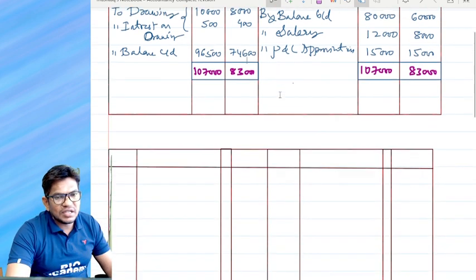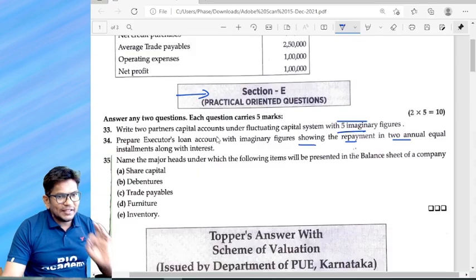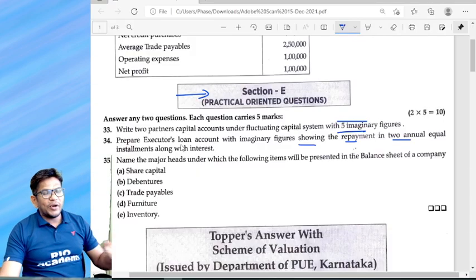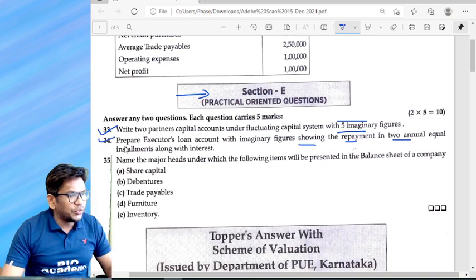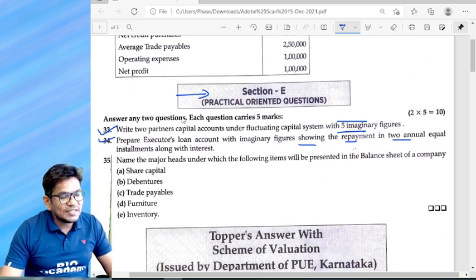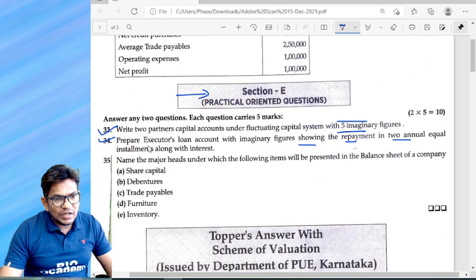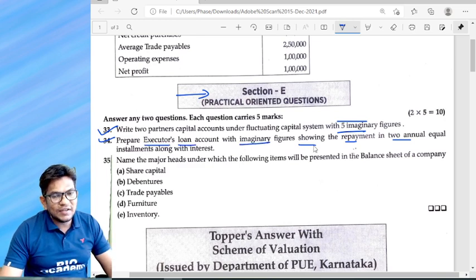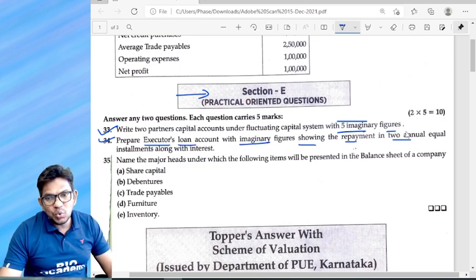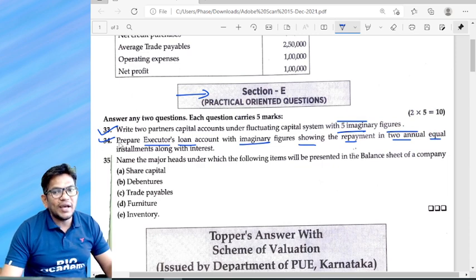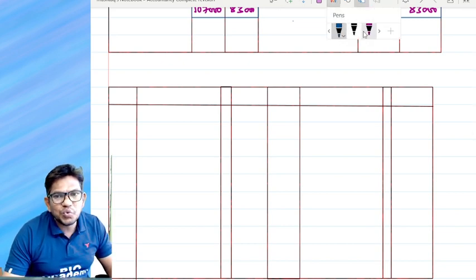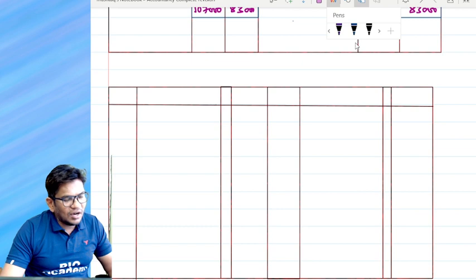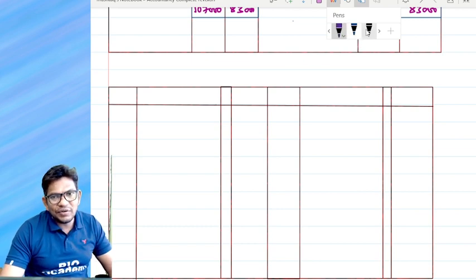Second question: yes guys, you can expect this for your midterm as well as the board exam. Question 33 and 34, you can expect this for sure. Look at that, prepare executor's loan account with imaginary figures showing repayment in two annual equal installments. We'll take anybody's loan account here. In the Oswal book they mention X's executor, or A's executor account. I would like to take the same thing here.